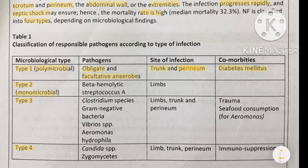The bacterium responsible for type 2 necrotizing fasciitis is beta-hemolytic Streptococcus Group A. The sites affected are the extremities — upper or lower limbs — and this type is not specific to patients with comorbidities; it can occur in any person.